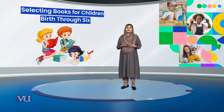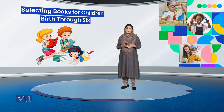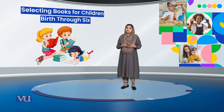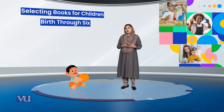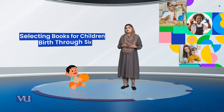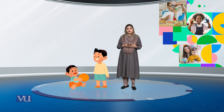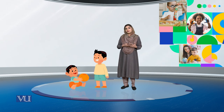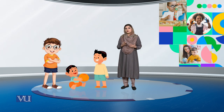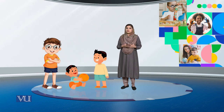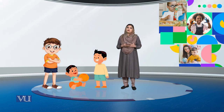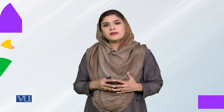In this topic, we will see that we have 3 age groups of children. First of all, we have toddlers. Then we have 2 to 4 years of children. Then we have 4 to 6 years of children. We will see which kinds of books should be introduced to children.